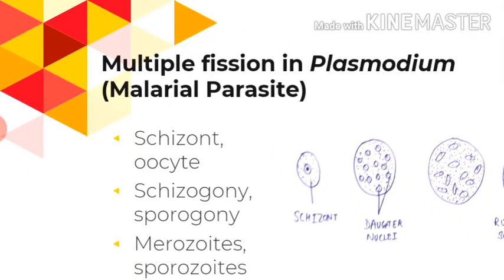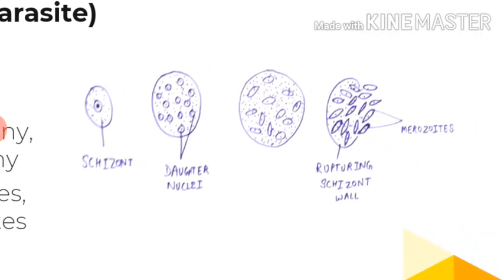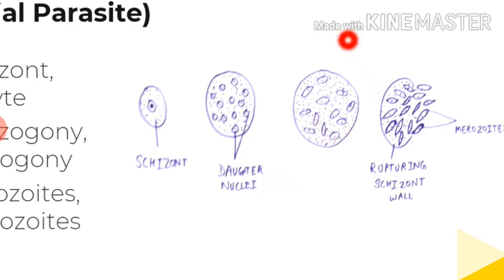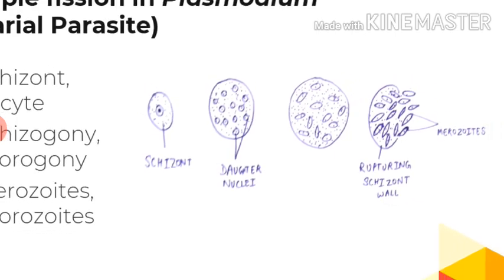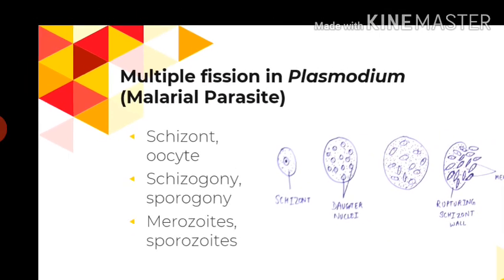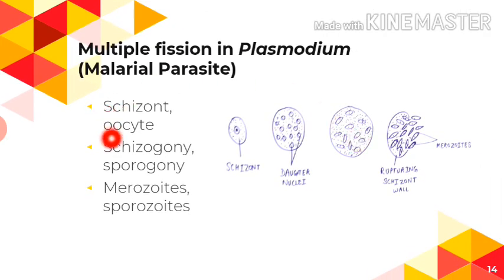The schizont stage is present in the liver of the human. When the nucleus of the schizont divides, it forms multiple nuclei; the cyst wall around the cytoplasm ruptures and all the merozoites are released — this is how Plasmodium infection spreads in humans. When present in the Anopheles mosquito as an oocyst, the process is sporogony, producing sporozoites.